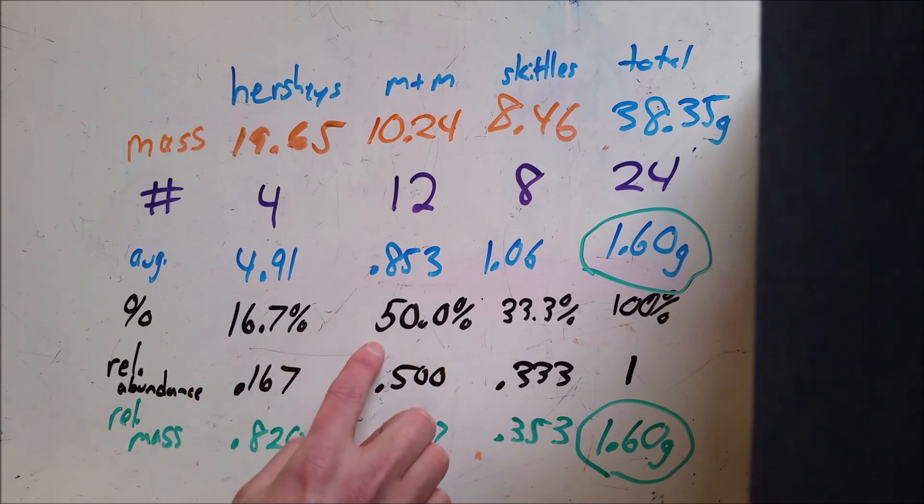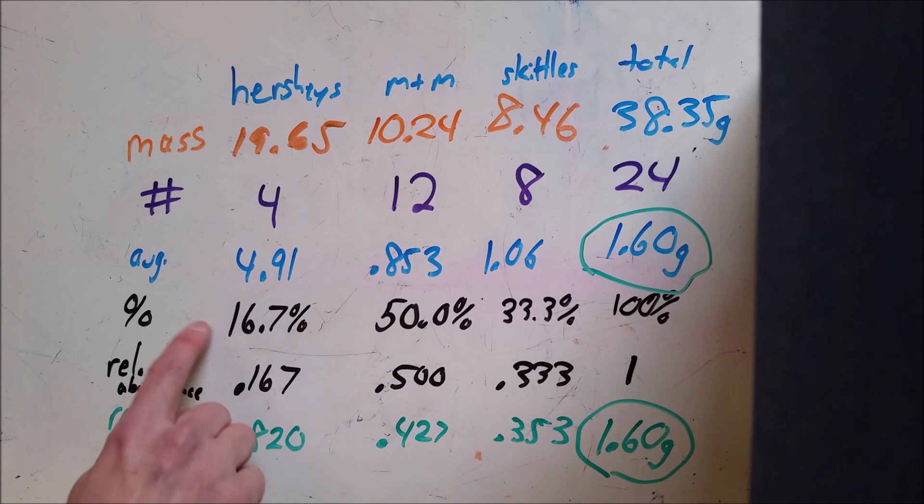And so we can use this percentage method to find the average mass of a particular element by doing this process that we did down here in black and green, instead of what you would traditionally do in orange and purple. So let's take a look at an example.